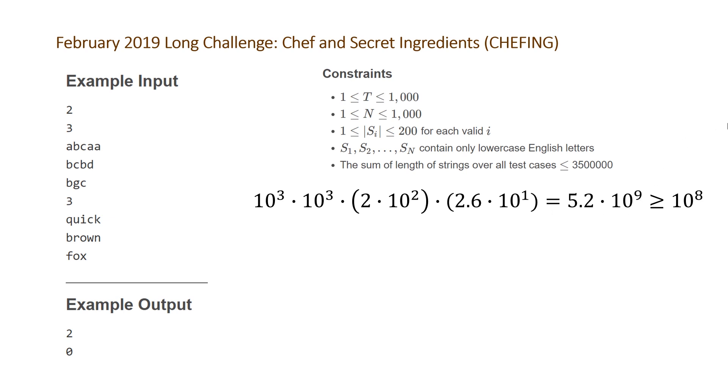If you watch these videos regularly, you'll know the rule of thumb is that we get 10^8 operations per second. So we can see that this will clearly time out. Note though that the problem says the sum of the length of strings over all test cases is guaranteed to be less than 3.5×10^7.